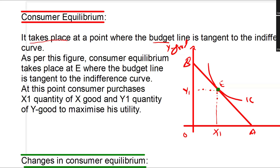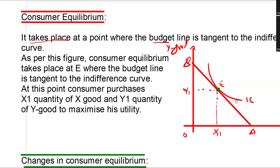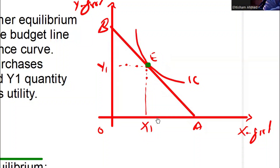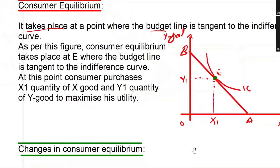We already know that the budget line is a negatively sloped straight line. This is the budget line AB. The budget line touches the indifference curve at point E, where the consumer purchases Y1 quantity of Y good and X1 quantity of X good. These are the quantities that will maximize total utility or total satisfaction of the consumer.